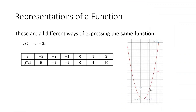These three examples — the formula, the table, and the graph — are all different ways of representing the exact same function. For instance, plugging t equals one into the formula gives one squared plus three times one, which equals four. The table also says that plugging in t equals one gives an output of four. And the graph also shows that plugging in t equals one gives an output of four. So these are three different ways of communicating the exact same relationship between input and output.